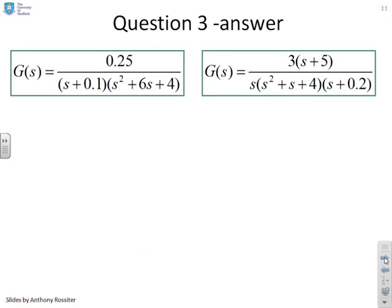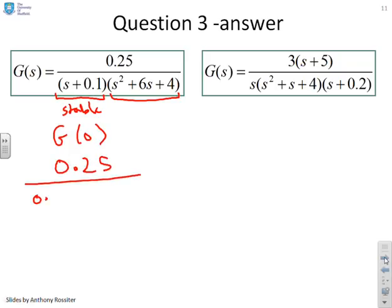Alright, with this first one, there's no tricks. This bit is stable, and so is this bit. And therefore I can go ahead and use my formula G(0). So what I get is 0.25 divided by 0.1 times 4. I'm not going to resolve that in any more detail because I'm sure you can do that yourself.